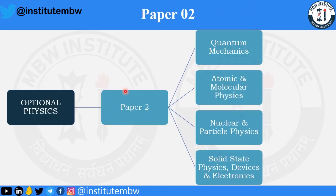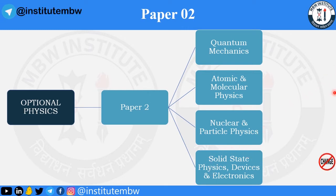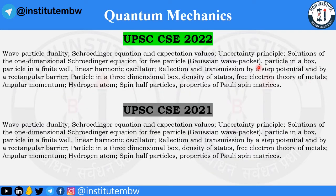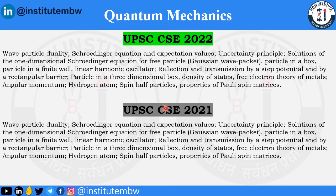Now coming to paper two. In paper two we have quantum mechanics, atomic and molecular physics, nuclear and particle physics, solid state physics, and devices and electronics. For quantum mechanics, comparing CSE 2022 and CSE 2021, the syllabus is the same — there is no change.